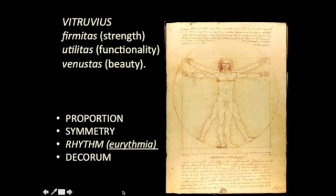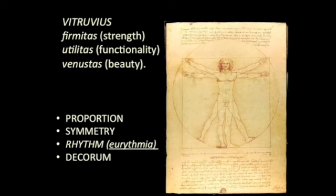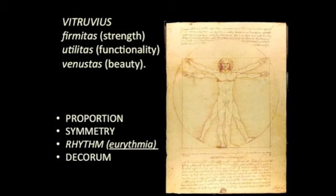Vitruvius is also looking for decorum — an appropriate response to an architectural task. It would be inappropriate to build your own house as if it were the Pantheon; it would be sacrilegious to put IKEA furniture inside a structure with religious meaning. Decorum means you make something appropriate to its condition: if it's a civic building, make it look civic; if domestic, domestic; if religious, religious. This whole discussion of typology — that certain types carry certain meanings — connects strongly to decorum.